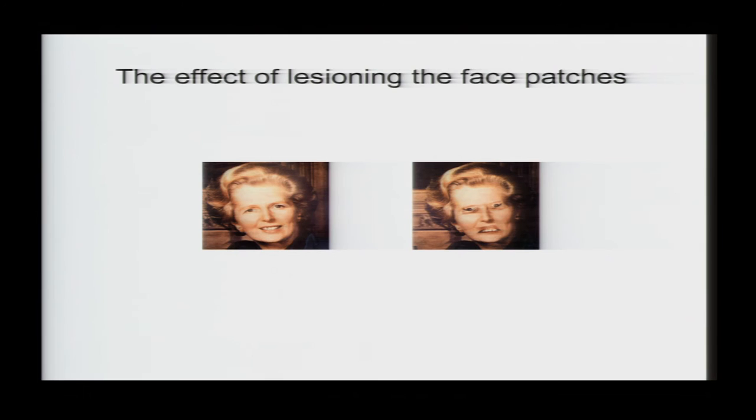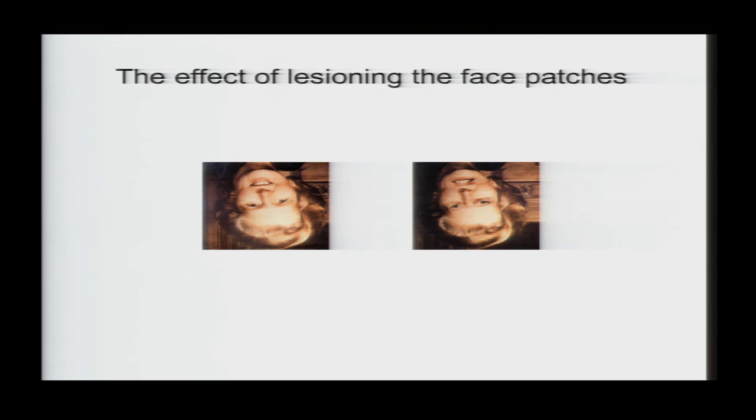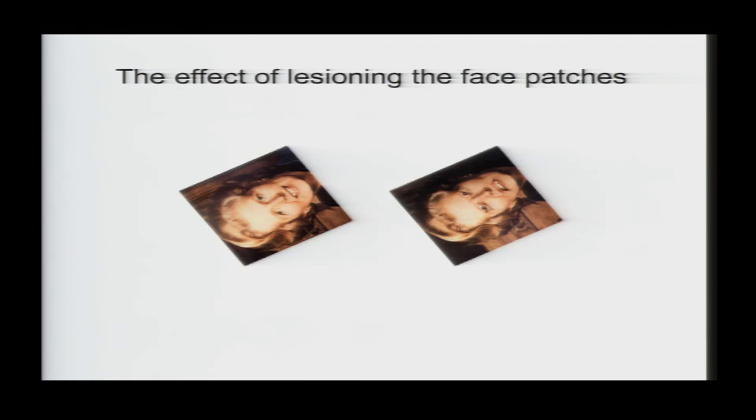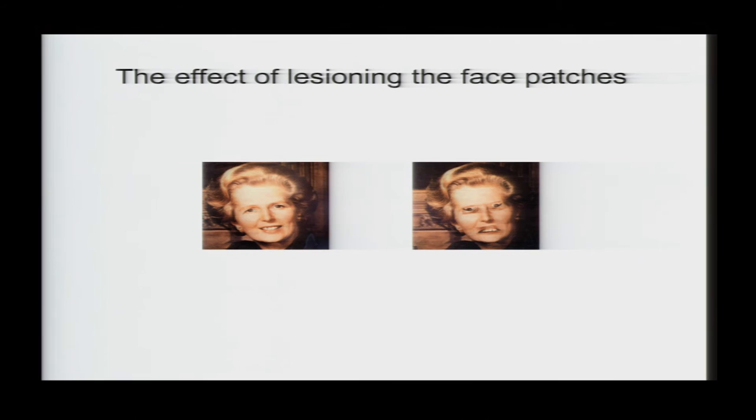So that when we see a face, it's very hard for us to grasp, you know, what is the contribution of V1 versus the higher order areas. But when you look at these faces here, you can see the color and the orientation and all the local features perfectly distinctly. And yet, you can't grasp the expression and the distinctiveness of this face because that's something that's computed by your higher order face regions.